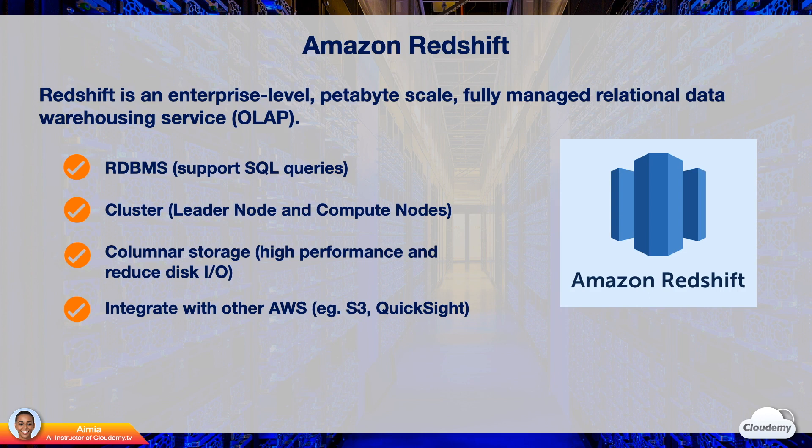Both RDS and Redshift are RDBMS. The difference is that RDS is a row-oriented relational database service optimized for OLTP, while Redshift is a columnar-oriented relational data warehouse optimized for OLAP.